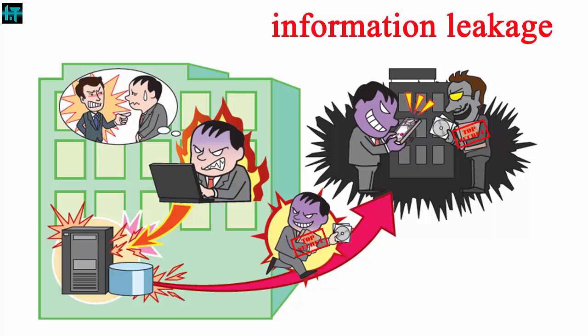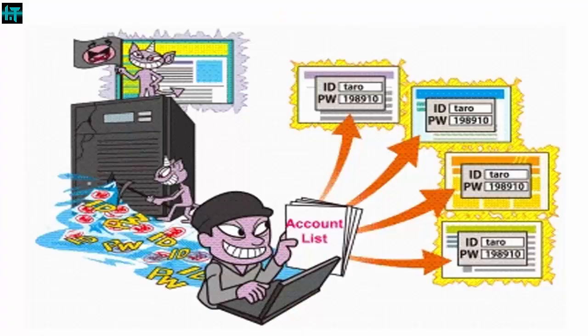Many similar incidents occur daily, and the vast majority of information leaks are accidental — not the result of intentional harmful action. Information loss has both direct and indirect costs. The intellectual property or confidential information itself, plus the cost of handling the consequences of its loss, including loss of credibility, competitive advantage, and more.